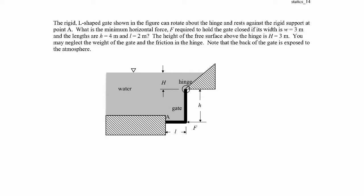This is a balancing moments problem — we don't want the gate to rotate about the hinge, so we sum moments about the hinge and set it equal to zero. That condition applies just when the gate is about to rotate. The forces that act to rotate the gate include the applied force F, so let's compute that moment first.